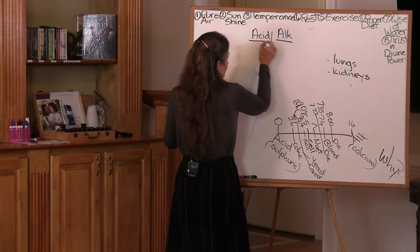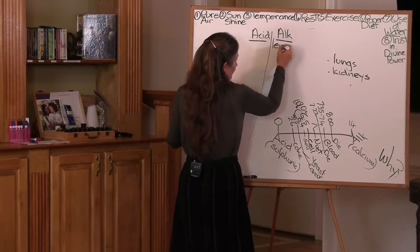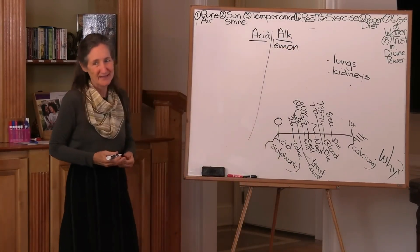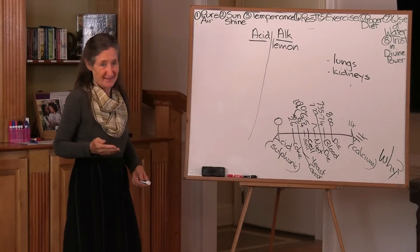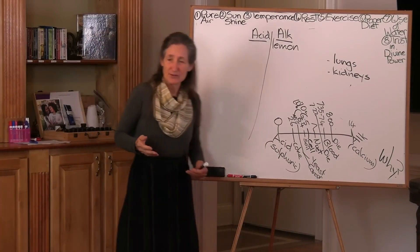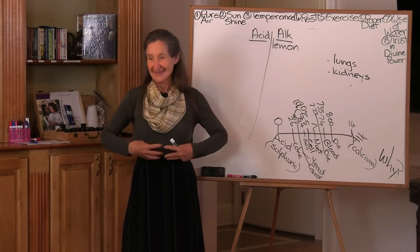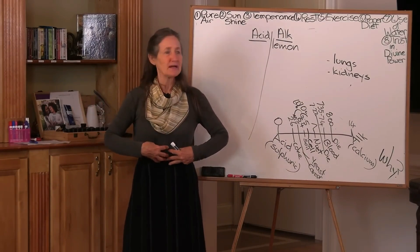And you might be surprised to see that the first alkaline food I'm putting up here is the humble lemon. And you might say, no, the lemon's acid. It is. And it's acid where it should be. There's only one part in the body that should be acid. Do you know where that is? Stomach. It must be acid.